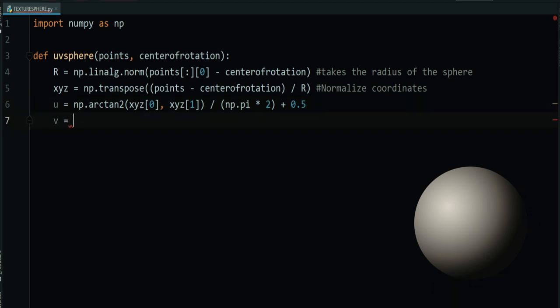For the V coordinate, it is even simpler, because we just take the Z, divide it by 2R, and finally add a 0.5 quantity.